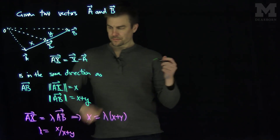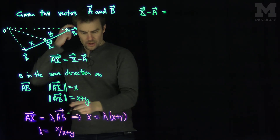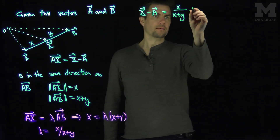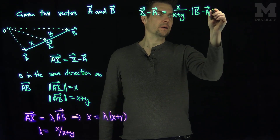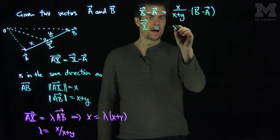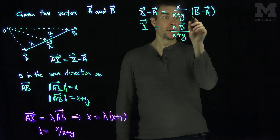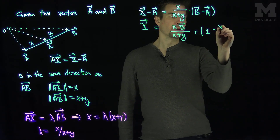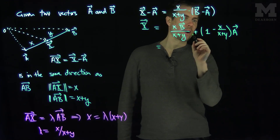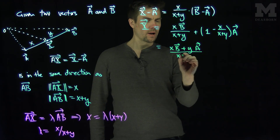We can use this to rewrite the equation: X minus A equals (x over x plus y) times (B minus A). Adding A to both sides, the vector point X is going to be (x·B over x plus y) plus (1 minus x over x plus y) times vector A, which simplifies to (x·B + y·A) over (x plus y).